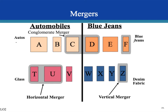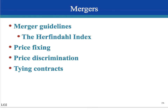Conglomerate mergers occur when two companies in completely different industries merge together — for example, Company C that produces autos merging with Company D that produces blue jeans. Usually the government allows these to go through because they don't lessen competition. The government looks at the Herfindahl Index, and the higher the Herfindahl Index a merger is predicted to cause for the merged company, the tougher the government tends to be on those potential mergers.